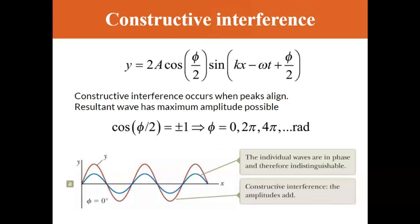When you have a resultant wave from two sine waves with the same wavelength and frequency but a phase shift, you can have constructive interference as long as both waves have their peaks aligned. That happens when the phase shift is 0 degrees, 360 degrees, and so on — a full cycle. In radians, that's a phase shift of 0, 2π, 4π, and so on. In that case you obtain the maximum amplitude possible for the resultant wave, since the amplitude term is 2A·cos(φ/2). With a phase shift of 2π, 4π and so on, the cosine term becomes 1, giving you an amplitude of 2A.